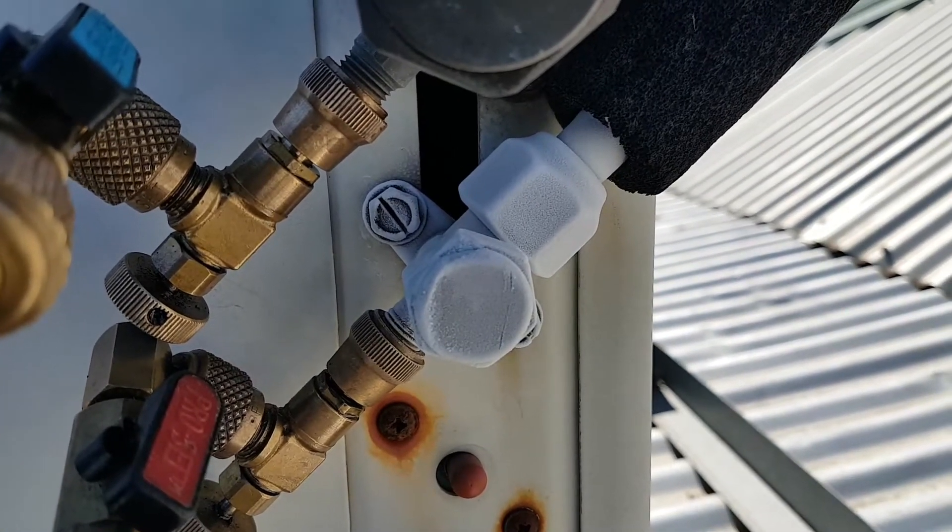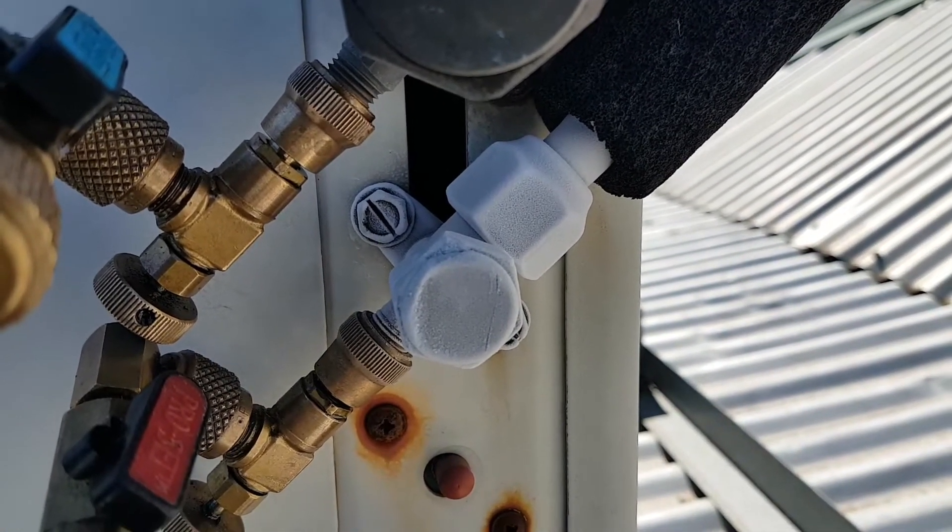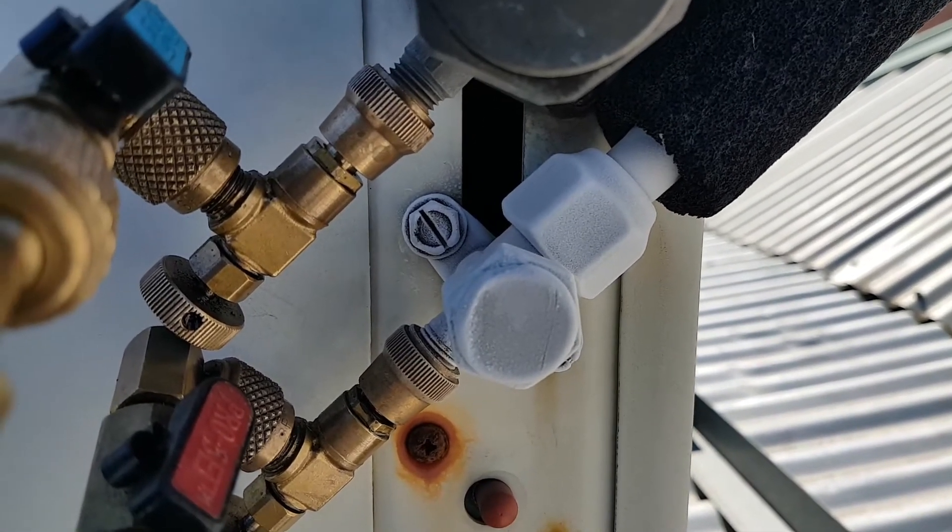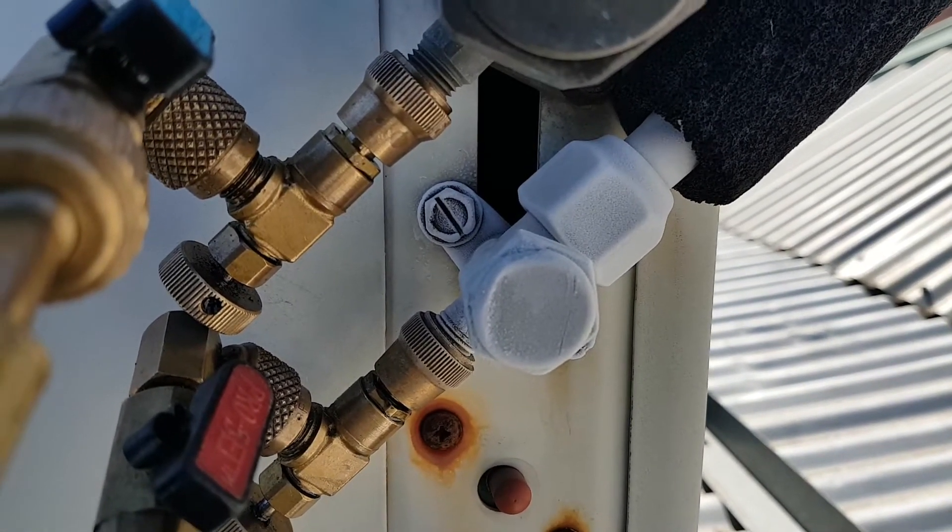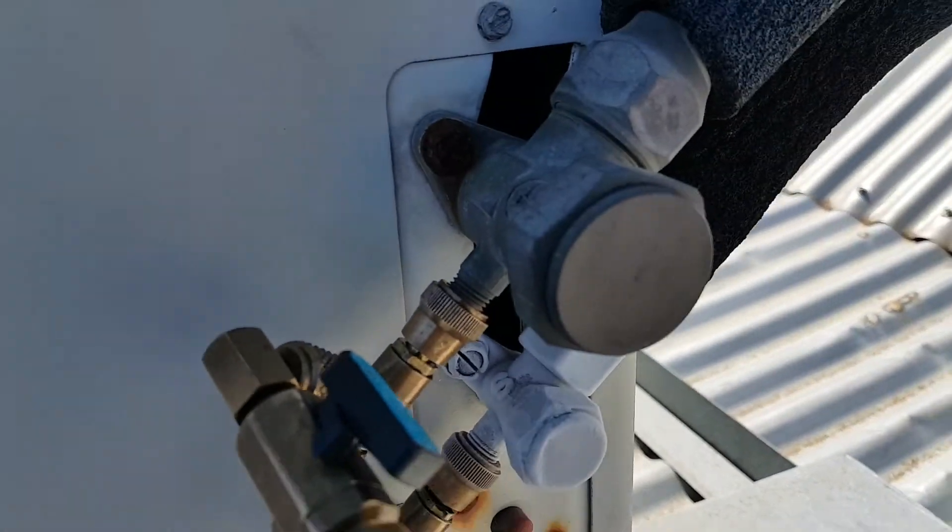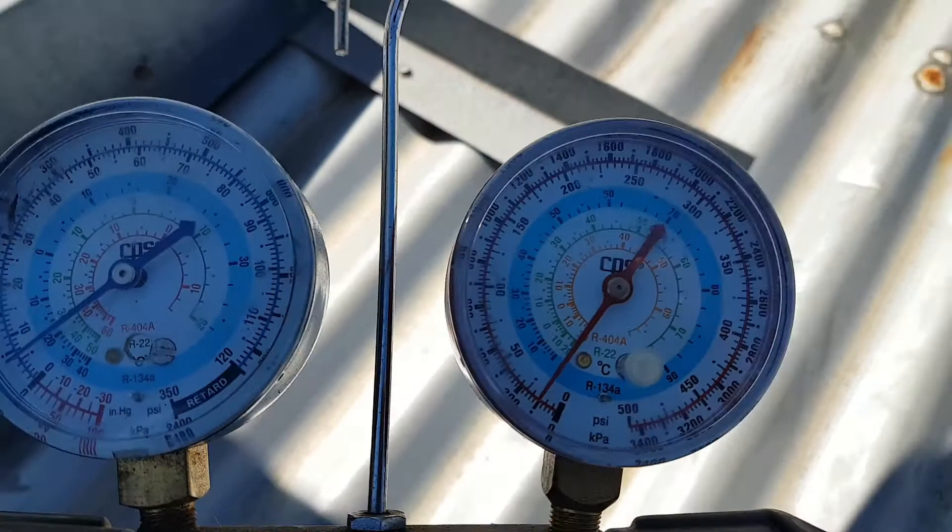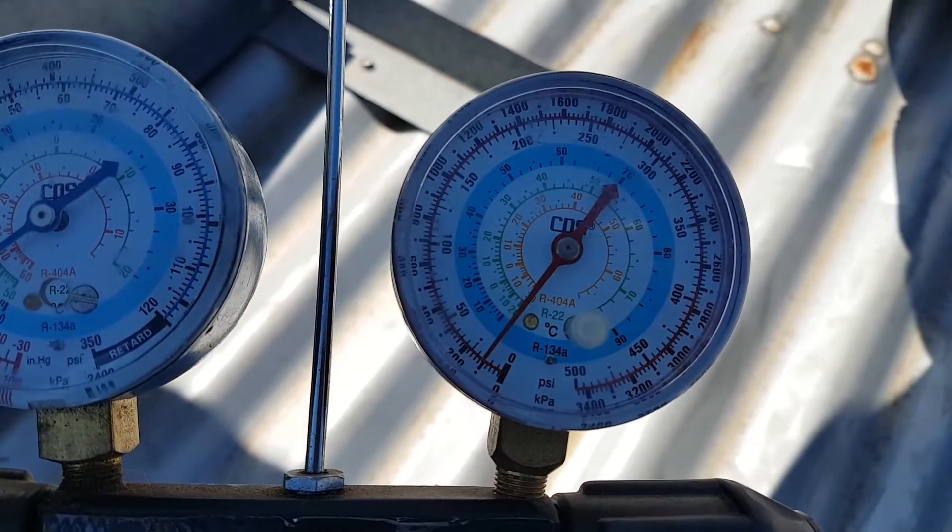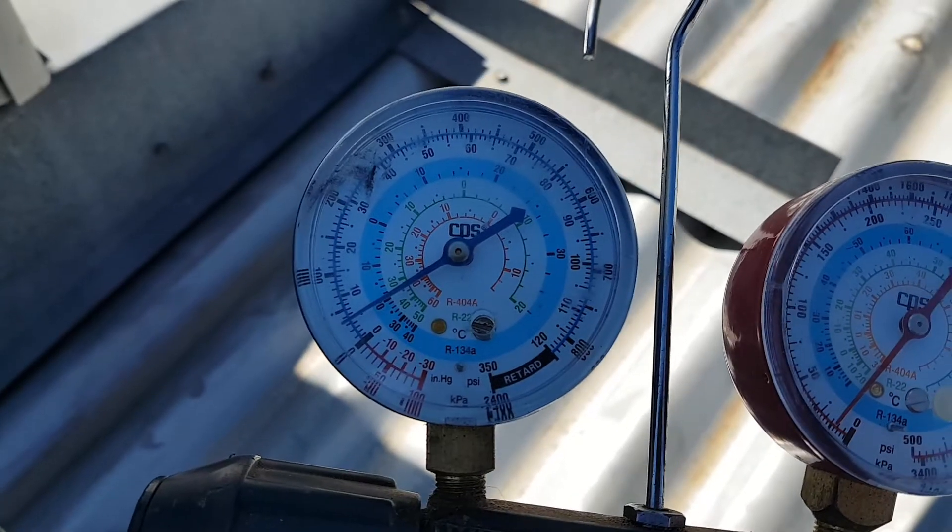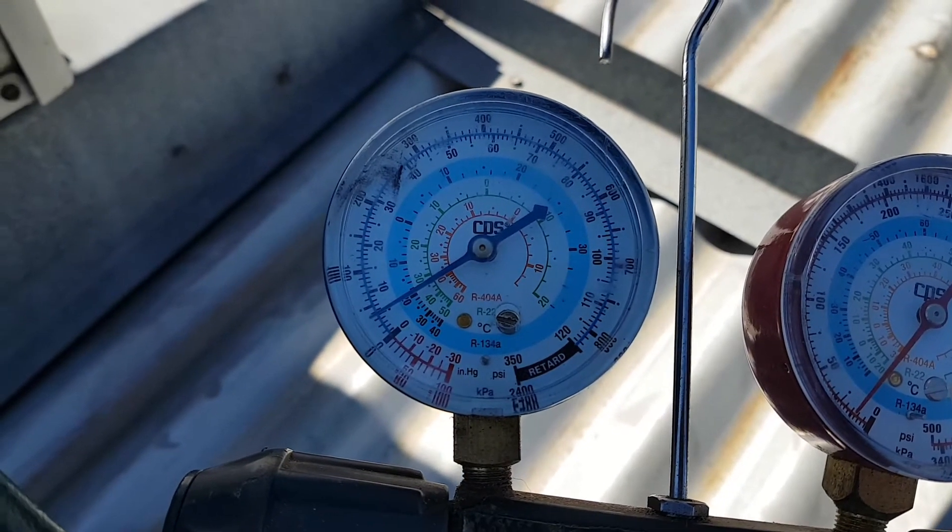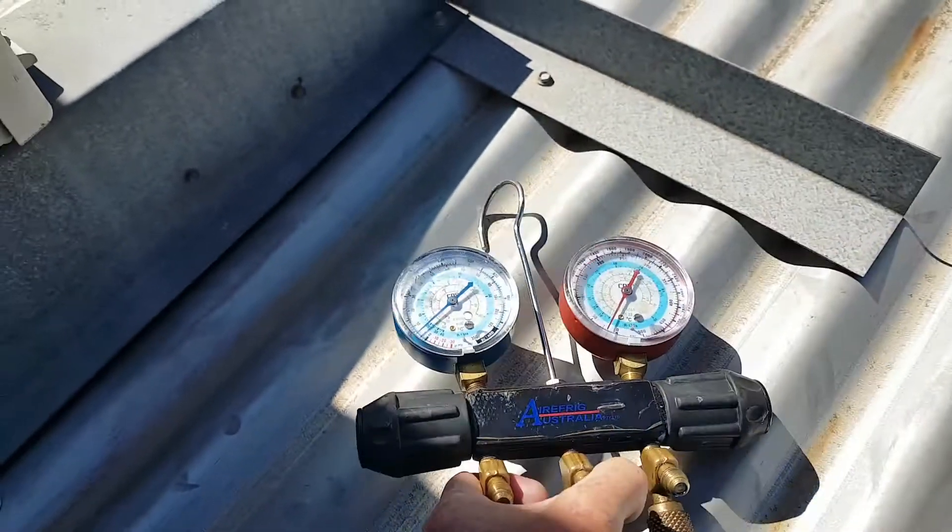What we've got here is a system that's lost most of its refrigerant. The liquid line is icing up, which is a good indicator that it's short of refrigerant. We've got high superheat, low saturated condensing temperature, and very low saturated evaporating temperature. It's an old system, so it doesn't surprise me that it's lost its gas.